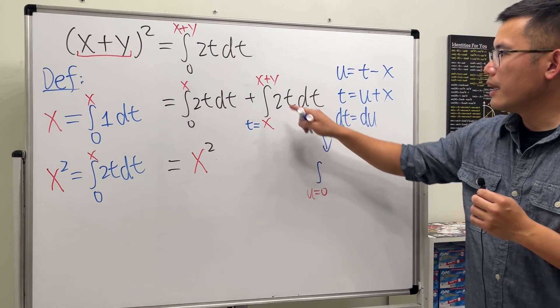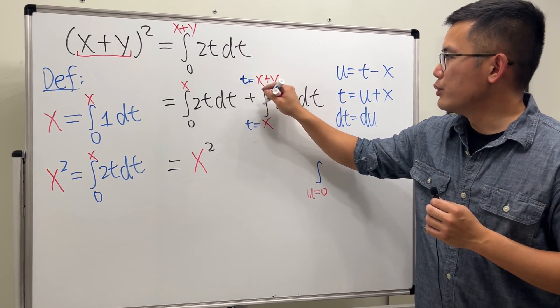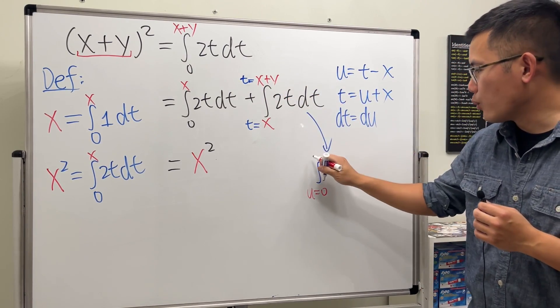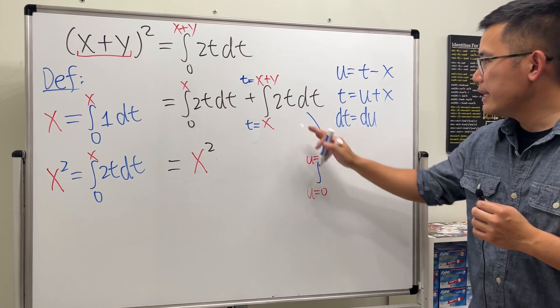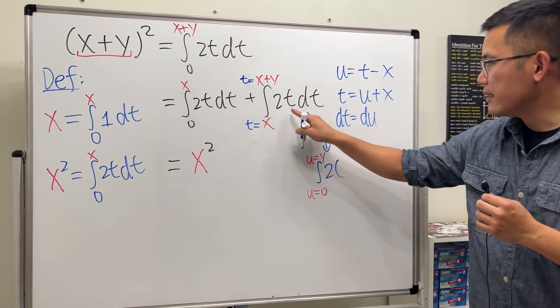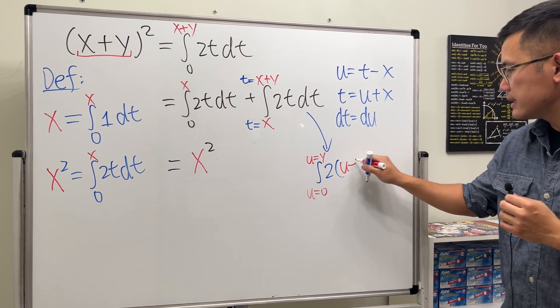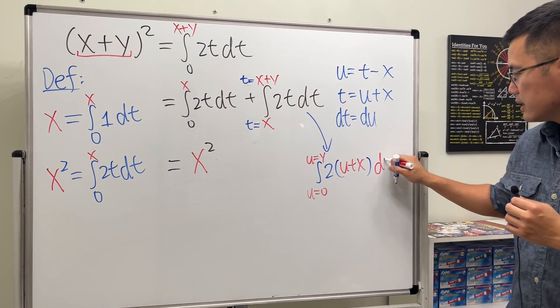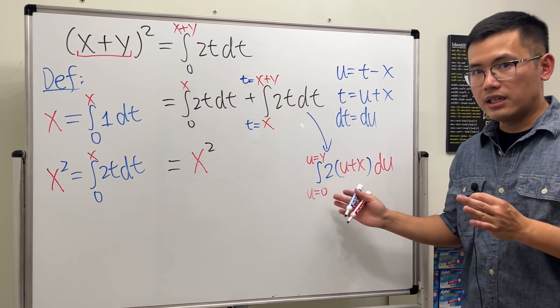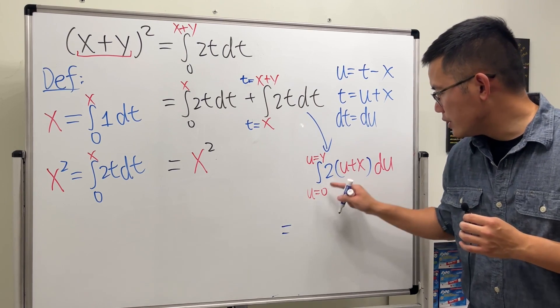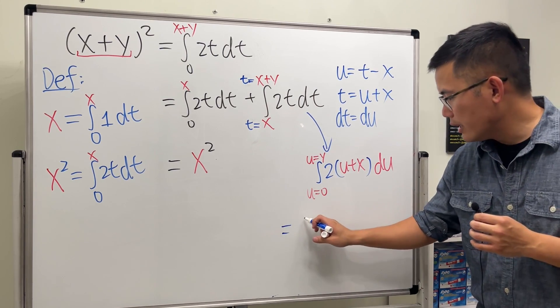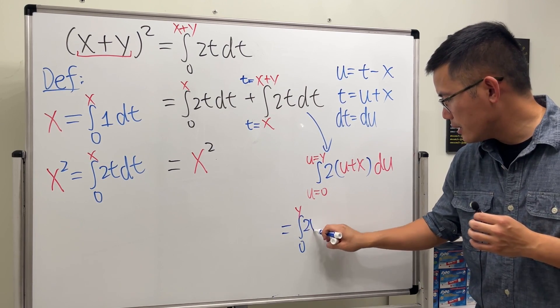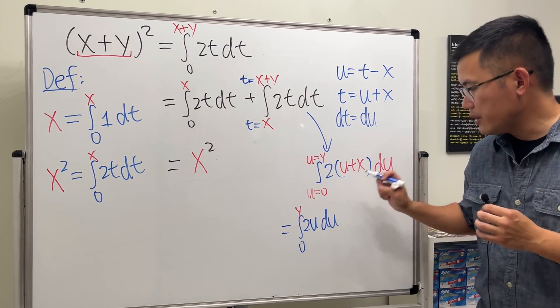And then we will have to put x plus y in here. The x will cancel, so we'll just have the y. And then we have the 2 and the t is u plus x, and the dt is the same as du. Very nice. Now we're just going to take off this, this way I'm going to distribute this. So we have 2u, and then that will be the integral going from 0 to y, and then 2u, and let's close that, we have the du here.